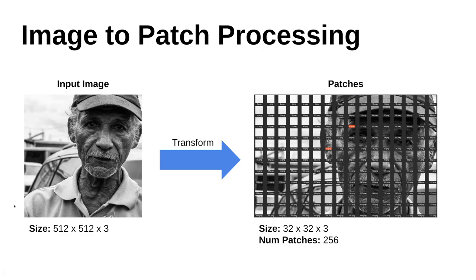One important thing before working with transformers is how to convert the complete image into patches. Let's say the image size is 512×512. It's an RGB image and we are going to transform it into patches. Here we have 256 patches, and the size of each patch is 32×32. These patches are also going to be RGB.